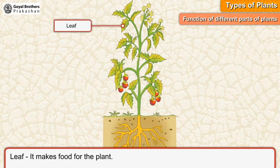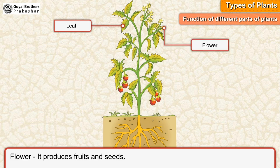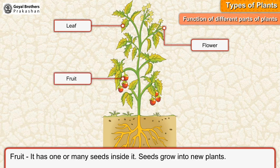Functions of different parts of plants: Leaf — it makes food for the plant. Flower — it produces fruits and seeds. Fruit — it has one or many seeds inside it. Seeds — seeds grow into new plants.